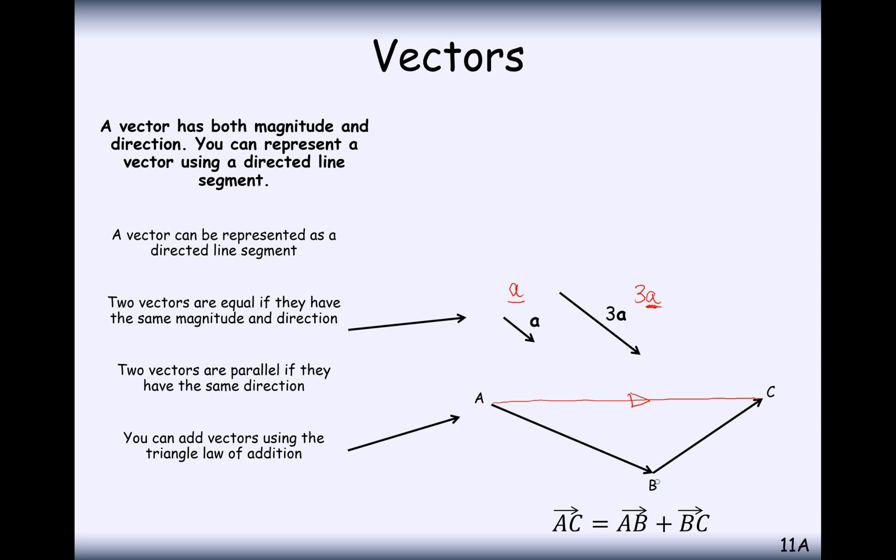Sometimes you have to go from A to B and then B to C afterwards. So for example, this here might be the vector A plus B. You go along A and then along B.